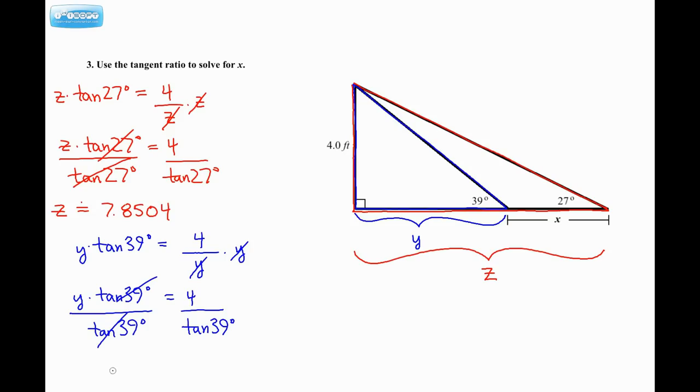So those cancel. So I'm going to work out y, so 4 divided by tan of 39 gives me approximately 4.9396. So that's y.